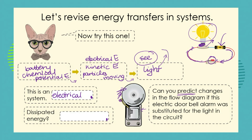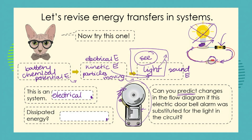Will we still see light energy if we substitute the light bulb for an electric alarm bell? No, we won't. Instead, the electrical energy is transferred and we're going to see kinetic energy in the form of a little arm vibrating backwards and forwards against the bell to create sound energy. So we can see that electrical energy doesn't only provide thermal or light energy — we can also get sound energy from an electric circuit.